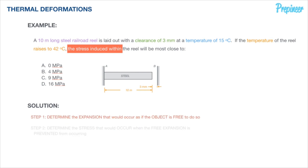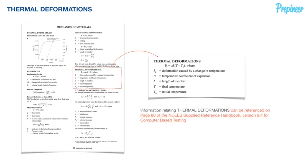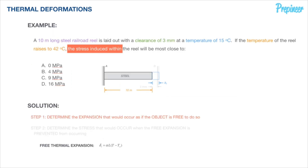Starting with step one, the first thing we need to do is remove one of the constraints by removing the wall at point B. We know that if it were free to expand, the steel railroad rod is going to expand some distance because we're increasing its temperature from 15 degrees Celsius up to 42 degrees Celsius. Here's our standard formula for free thermal deformation.